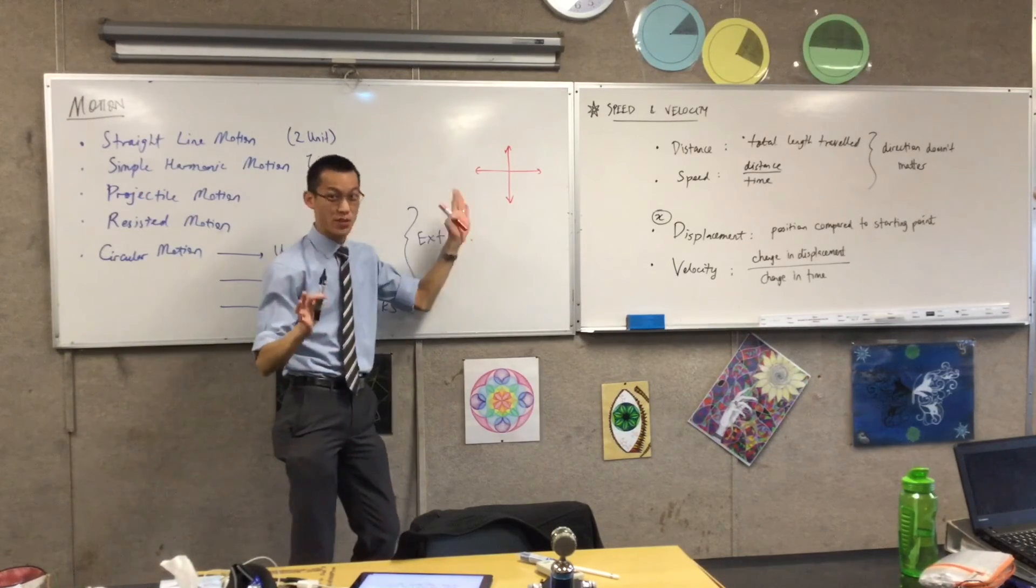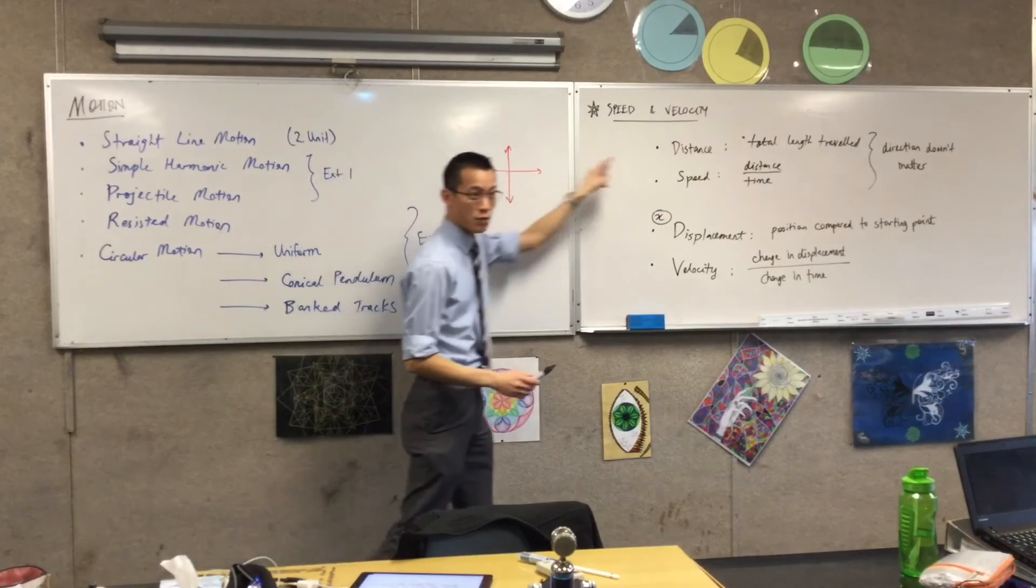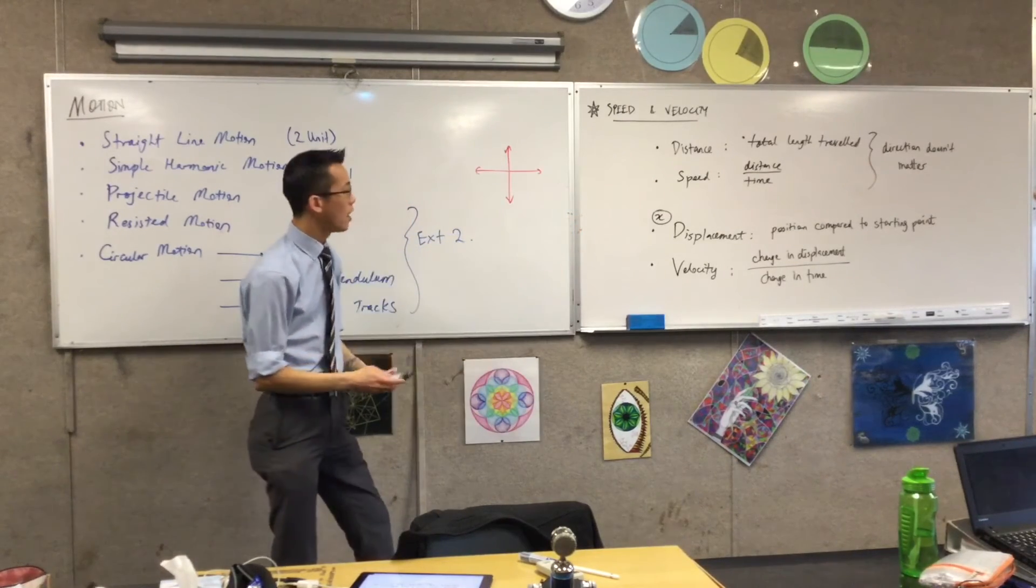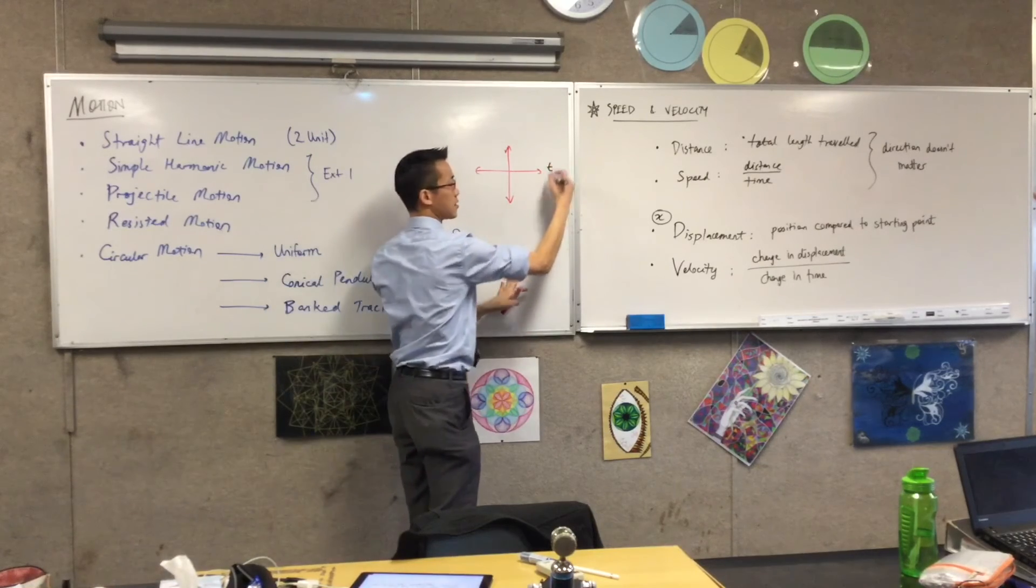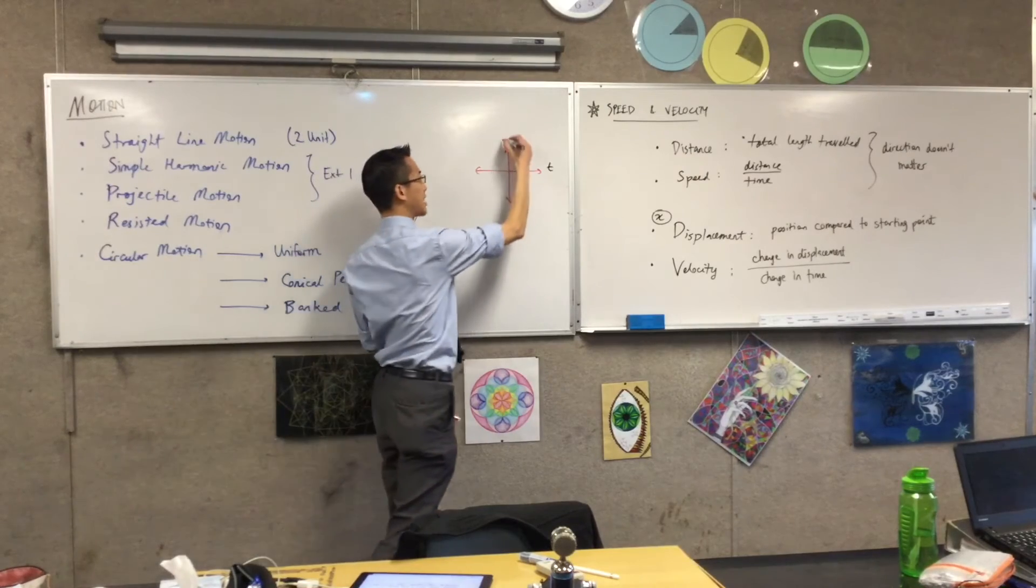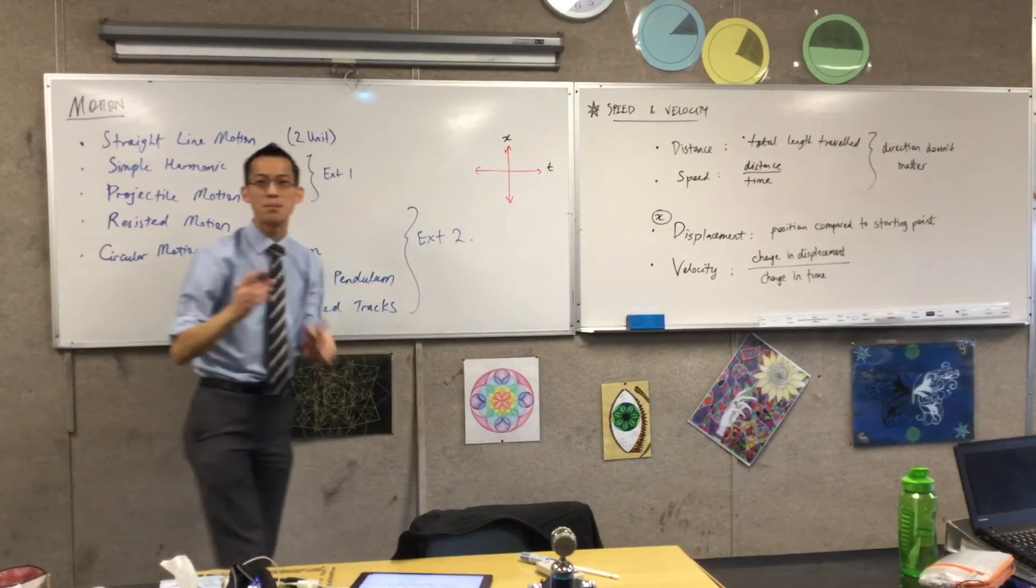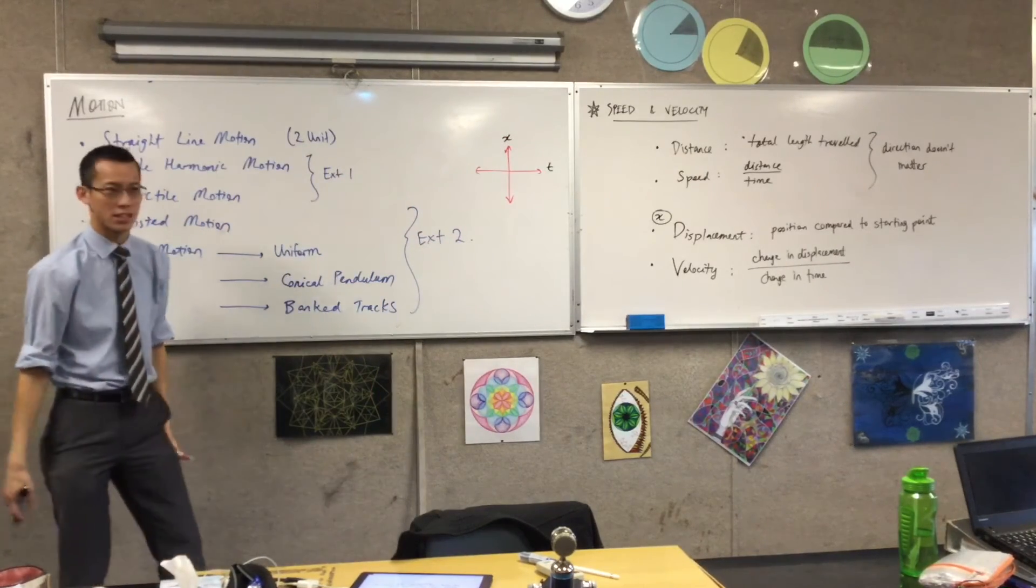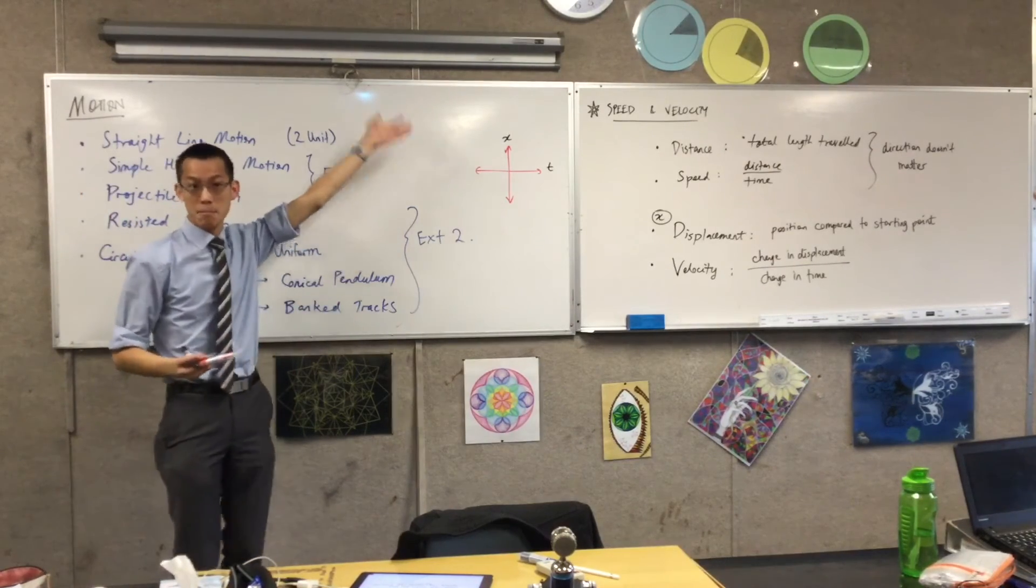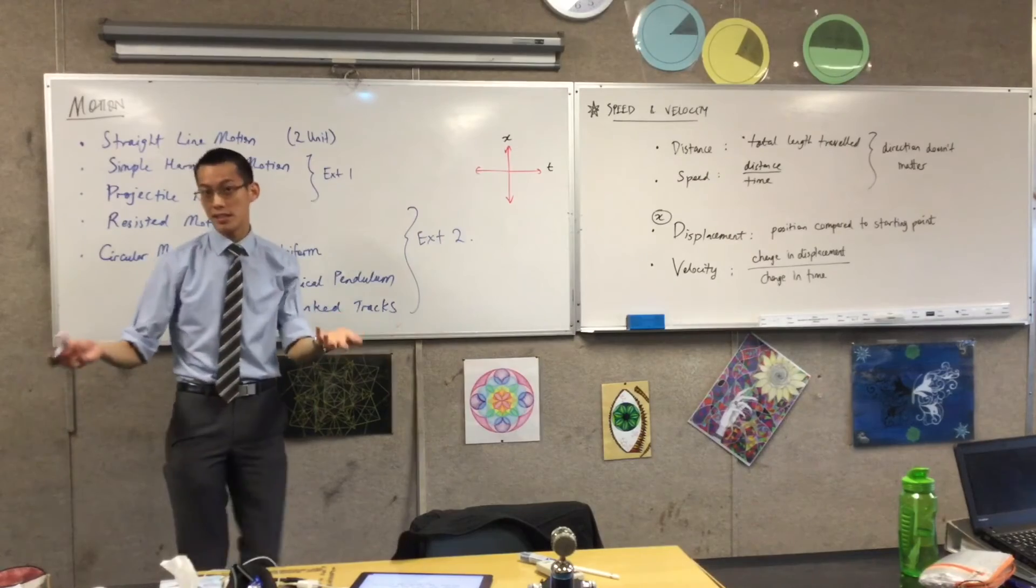But since we pretty much universally think about time going from left to right, like this is just a chronological thing because we read from left to right, we tend to call this axis the time axis, which means that x, the displacement, gets put onto the vertical. That's a bit weird. Students confuse this because they're like wait, but I'm so used to x being horizontal.